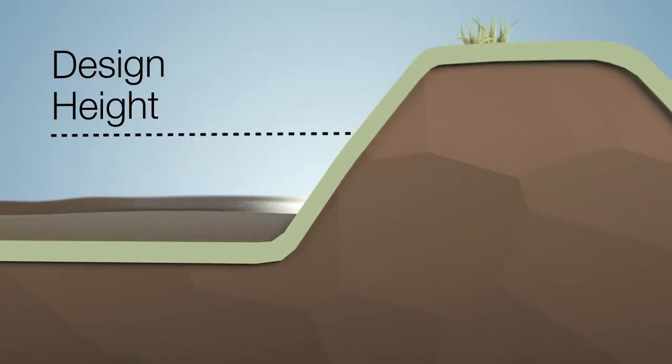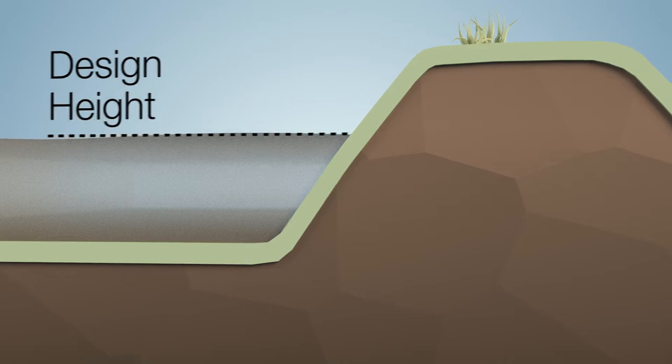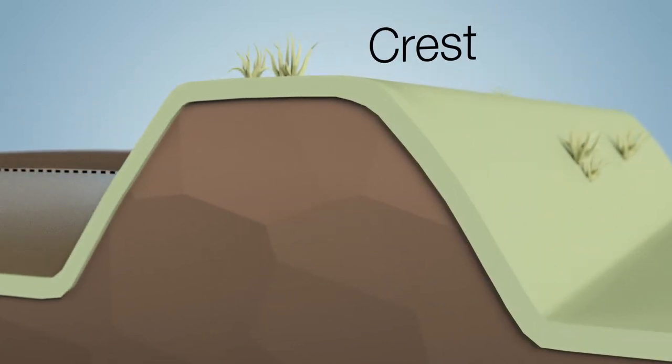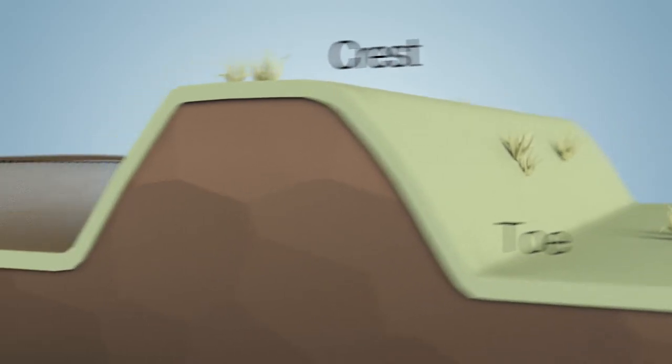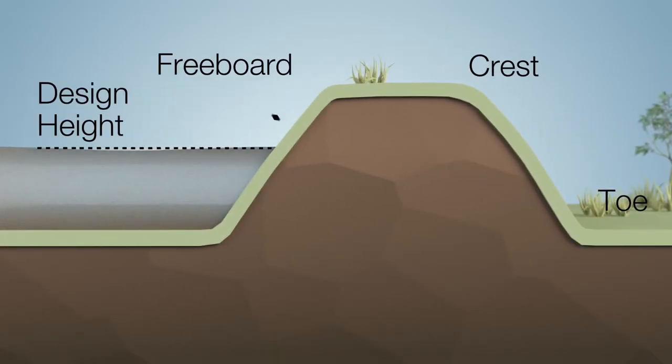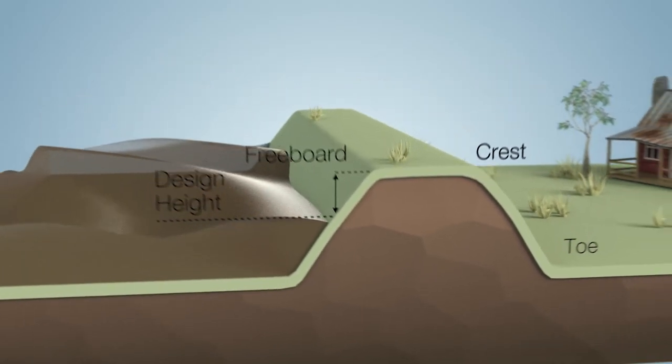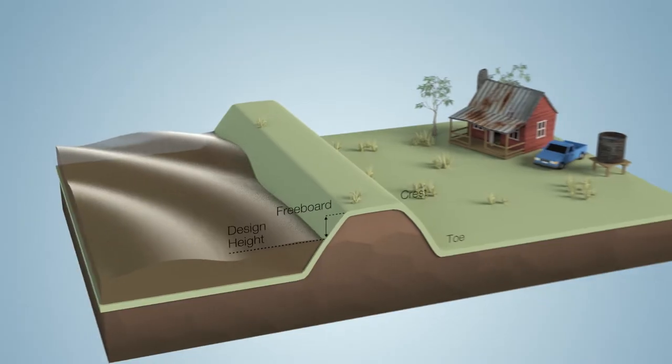Most levees have a design height. This is the height of flood water the levee is designed to withstand. The crest is the top of the levee and the toe is the bottom. The freeboard is the difference between the design height and the crest. A freeboard allows for wave action and normal deterioration of the levee over time.